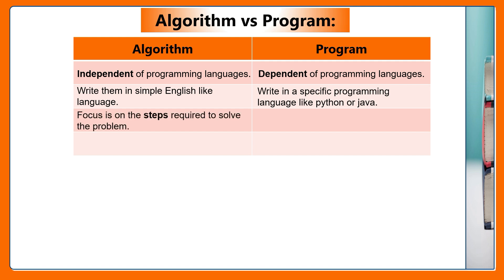In algorithm, the focus is on the steps required to solve the problem. In program, the focus is on coding to implement the steps. Algorithm is step-by-step procedure. A program is the actual implementation of the algorithm. Let us see an example to understand this clearly.